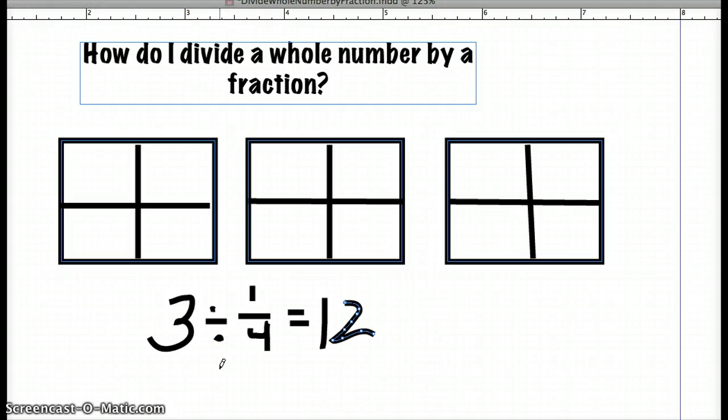So if I use our other trick that we've learned, and that's to flip the second, either fraction or whole number, and multiply, we should also come out with the same number. So we're going to flip one-fourth and make it four. When we multiply, we come out with three times four is twelve. Same answer, and our model shows us that it's exactly the same.